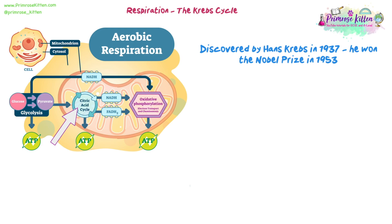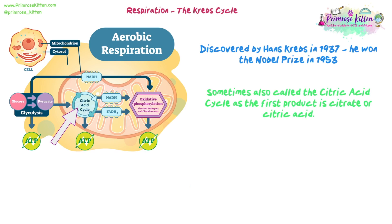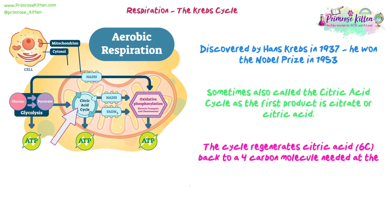It was discovered by Hans Krebs in 1937 initially, and then he worked on it for a few years, and eventually he won the Nobel Prize in 1953, which he shared for his discovery of the citric acid cycle. It's called the citric acid cycle and not the Krebs cycle sometimes because it actually involves citric acid, which is one of the first stages in the cycle. Ultimately, what the cycle does is it regenerates the citric acid back to the start molecule, a four-carbon molecule, which is needed to start the process off again.